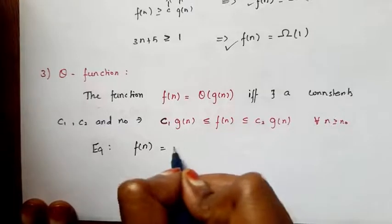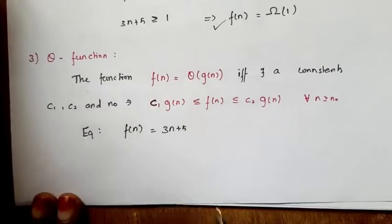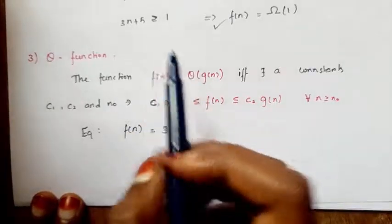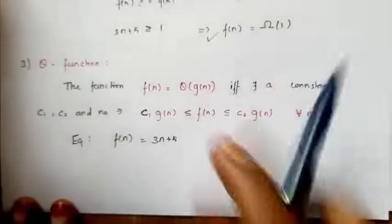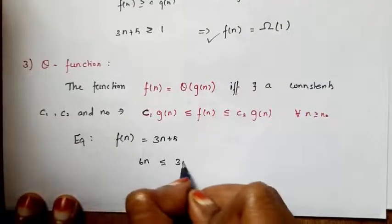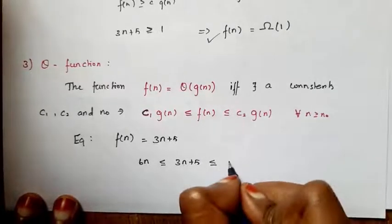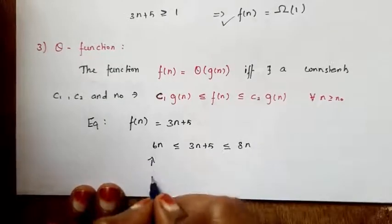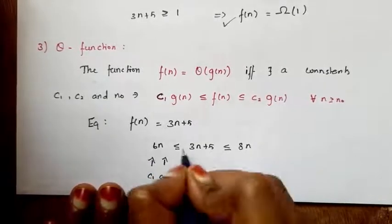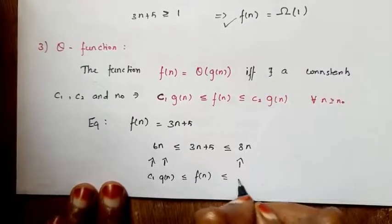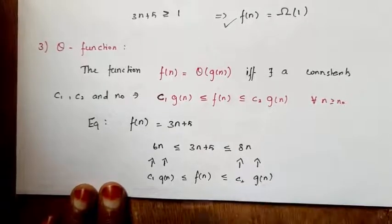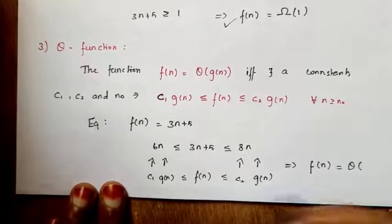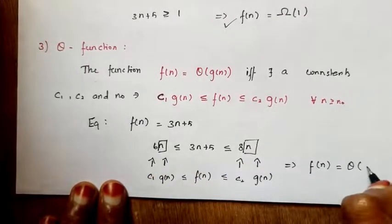Taking the same example, f(n) = 3n plus 5. From the lower bound we take 6n, and from the upper bound condition we take 8n or 10n. So we have: c1·g(n) = 6n ≤ 3n+5 ≤ 8n = c2·g(n). Here c1=6, c2=8, and g(n)=n, so our condition is satisfied. We can write f(n) = Θ(n).